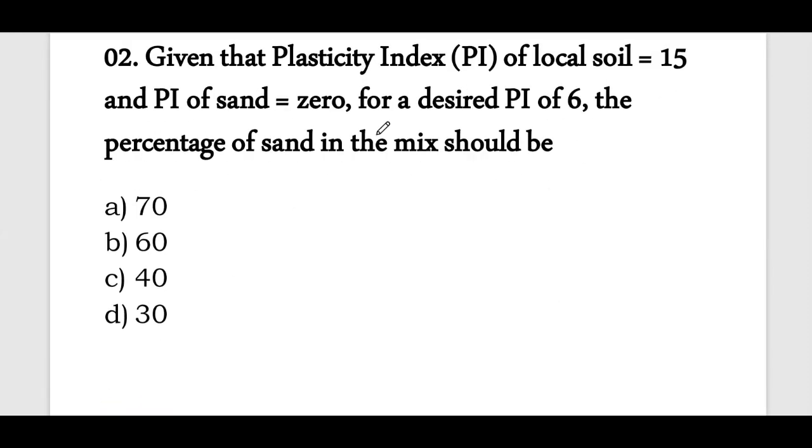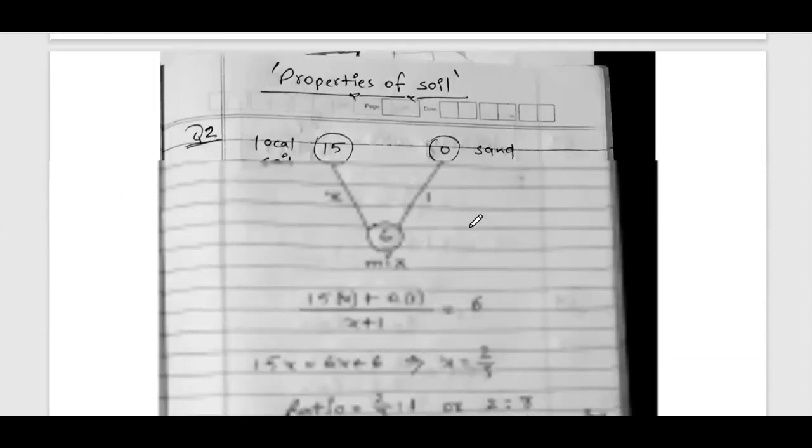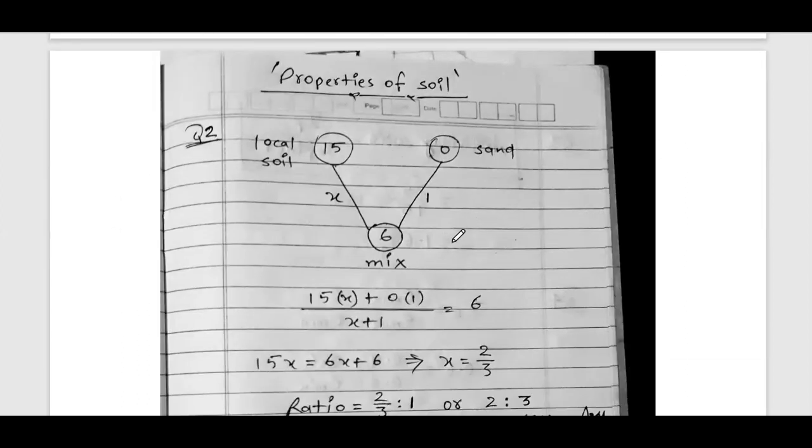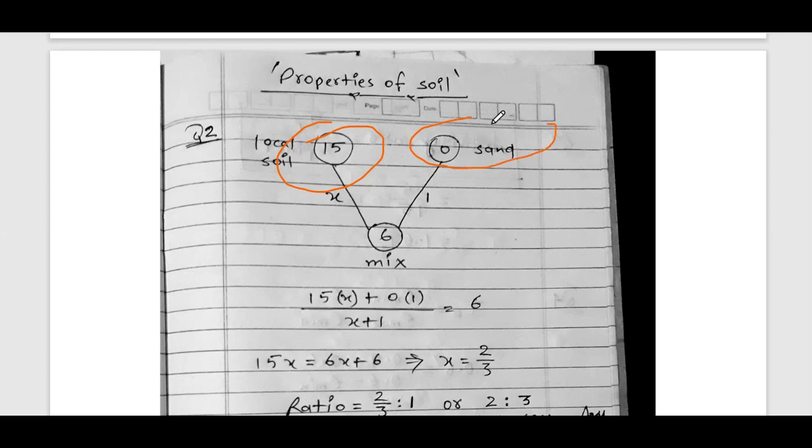Question number 2: Given plasticity index of local soil is 15 and sand plasticity index is 0 because it is a non-plastic soil. For a desired plasticity index of 6, what should be the percentage of sand in the mix? We are assuming that the mix percentage ratio is x to 1. So, 15 times x plus 0 times 1 divided by x plus 1 equals 6.